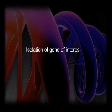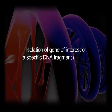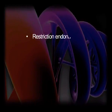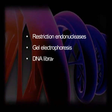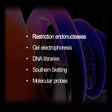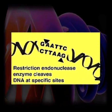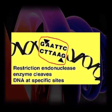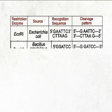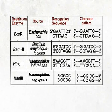Isolation of gene of interest involves several tools and techniques such as restriction endonucleases, gel electrophoresis, DNA libraries, southern blotting, and molecular probes. Restriction endonucleases, also called restriction enzymes, are a class of enzymes that cut DNA at specific sites called restriction sites or recognition sites. Some commonly used restriction enzymes are EcoRI, BamHI, HindIII, HaeIII, etc.